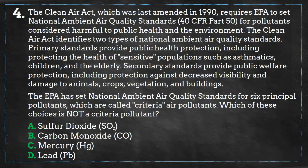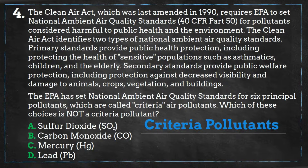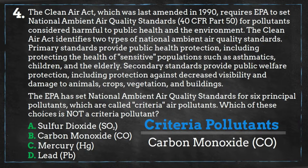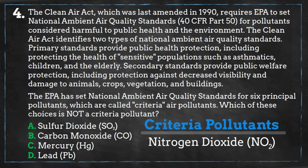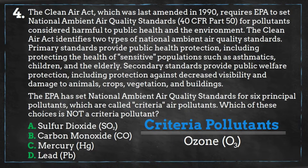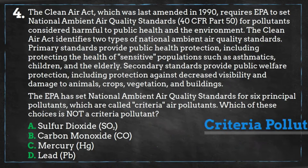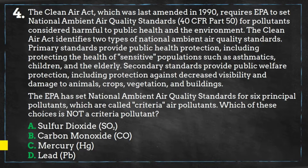The six principal pollutants that make up the list of criteria air pollutants are carbon monoxide, lead, nitrogen dioxide, ozone, particulate matter, and sulfur dioxide. So, answer C is your only choice that is not a criteria air pollutant.